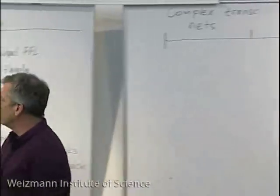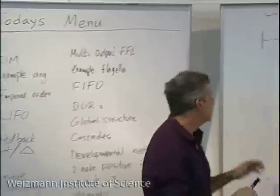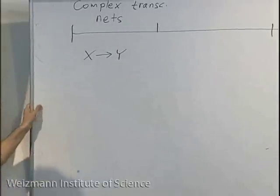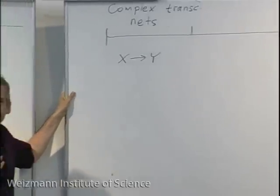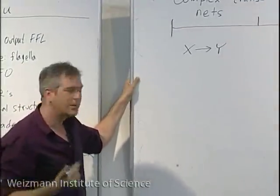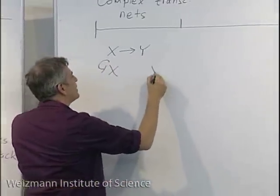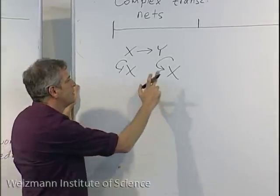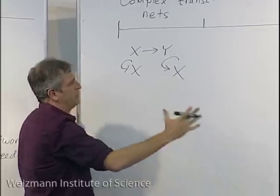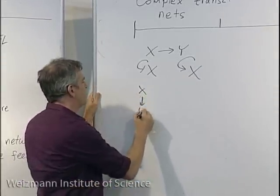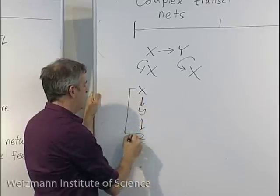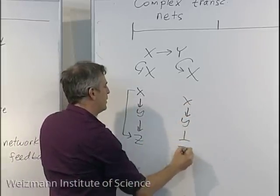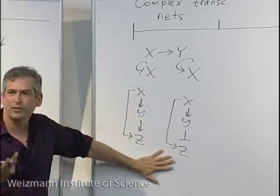As a review of the last three classes, we talked about transcriptional networks and network motifs — patterns that occur again and again — each one carrying out specific dynamical or information-processing functions. We talked about negative and positive auto-regulation: speed-up and stabilization of levels, delay and widening of stochasticity. We talked about the feedforward loop as a sign-sensitive delay element and the incoherent feedforward loop as a pulse generator and response accelerator.